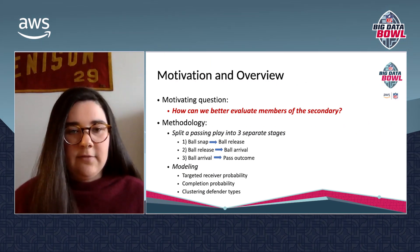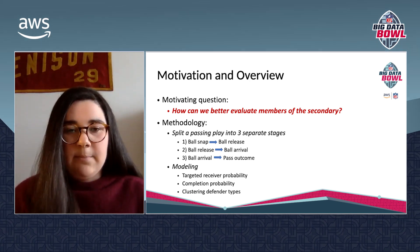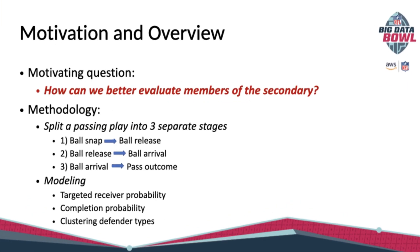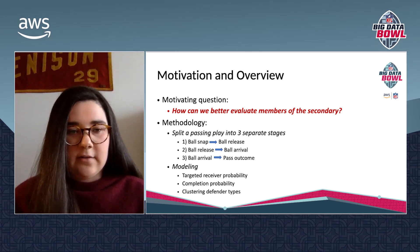Getting right into my motivation and overview: I was motivated by the question of how can we better evaluate members of the secondary? To do this, I split a classic play into three separate stages — ball snap to ball release, ball release to ball arrival, and ball arrival to pass outcome. My analysis was framed upon two models: a target probability model and a completion probability model, both using all passing plays from 2018. Using these models, I came up with three separate stats, which I then used to cluster defender types.